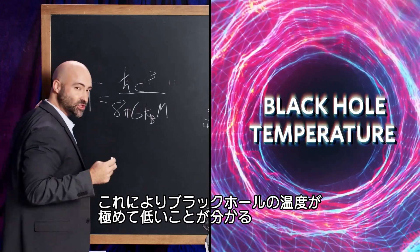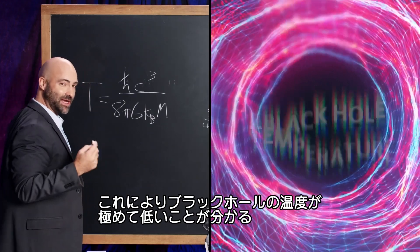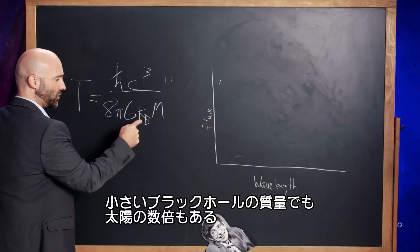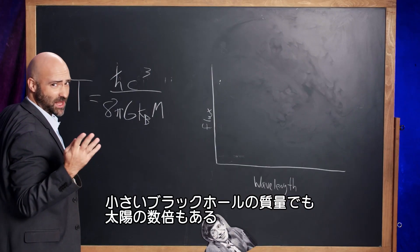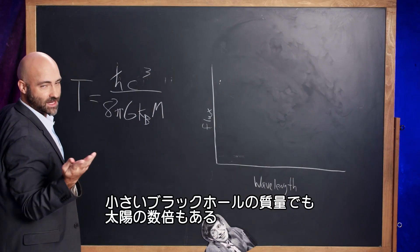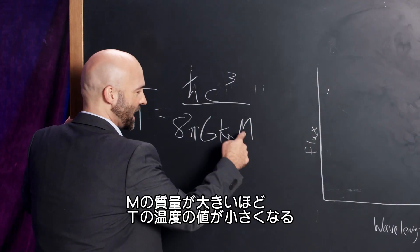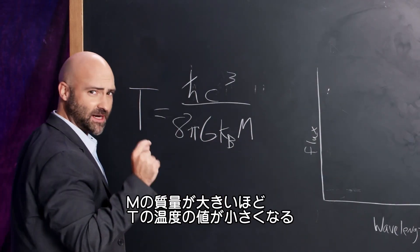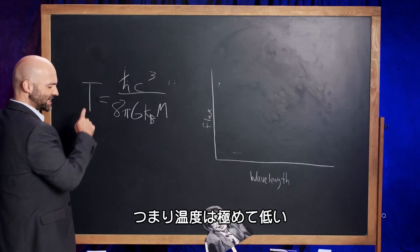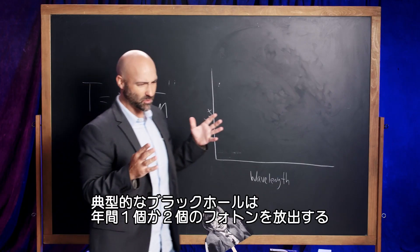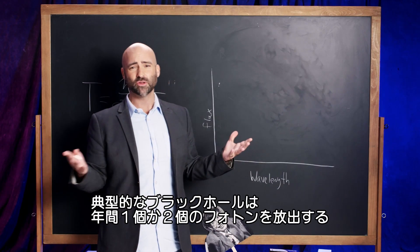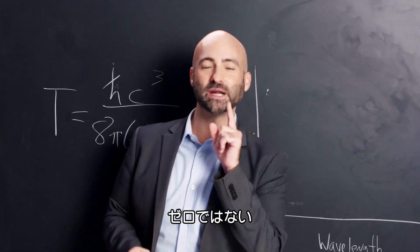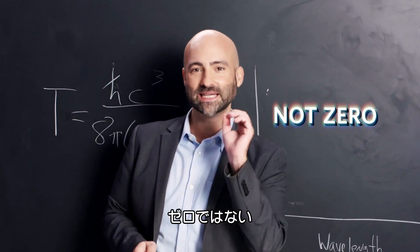This is telling us that the temperature of a black hole is incredibly small because the mass of a black hole — even the smallest black holes have a mass of a few times that of the sun — makes this a very, very big number, which makes the temperature a very, very small number. We're talking a typical black hole emitting like one or two photons a year, but it's not zero.